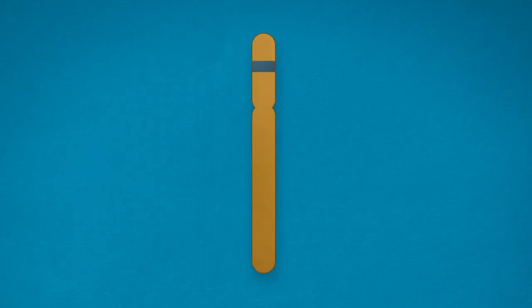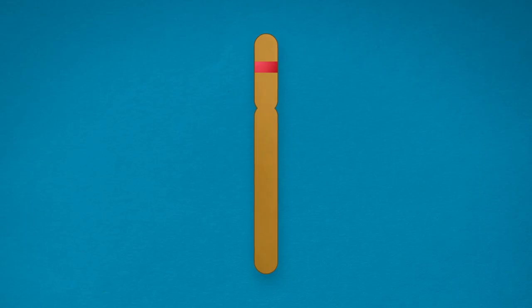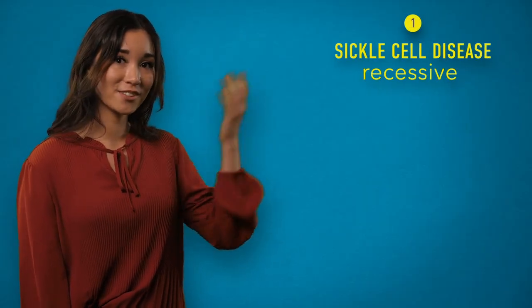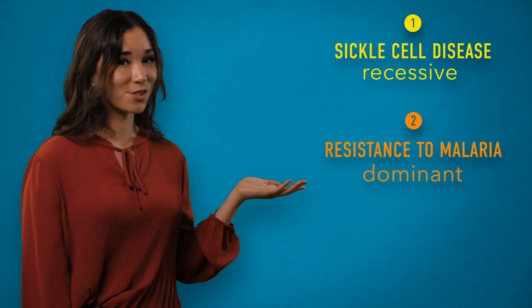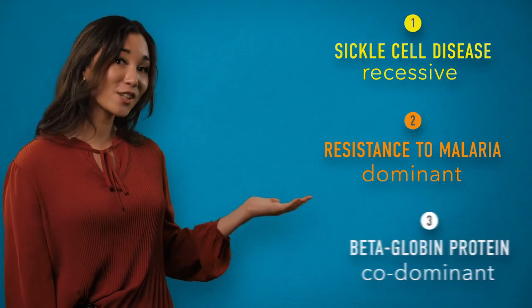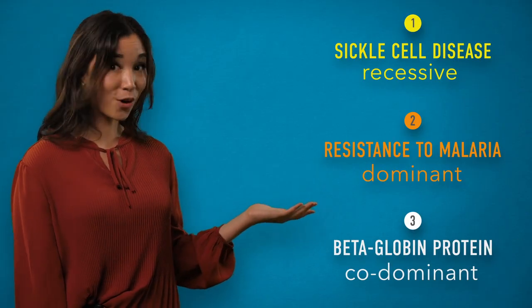For example, we all have a gene called HBB. One version or allele of this gene is called HBS and it can cause three different traits: sickle cell disease, which is recessive, resistance to malaria infection, which is dominant, and beta globin protein type, which is codominant.